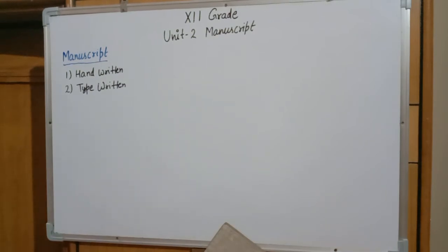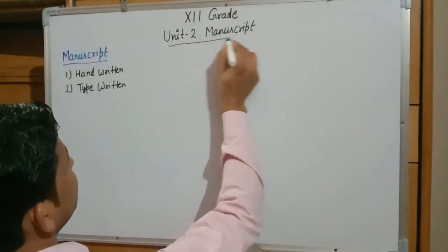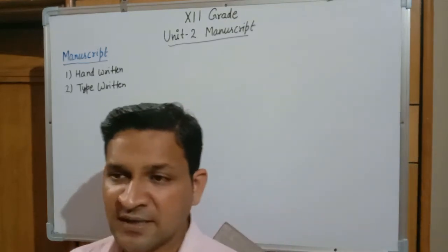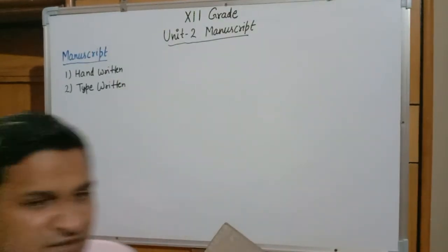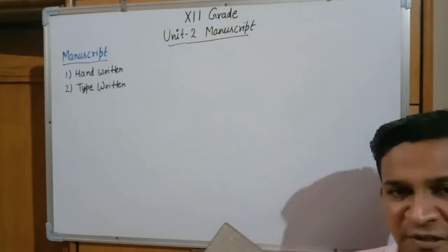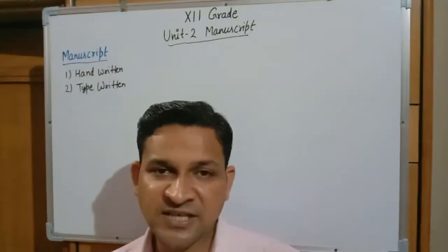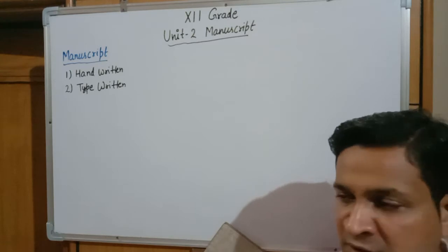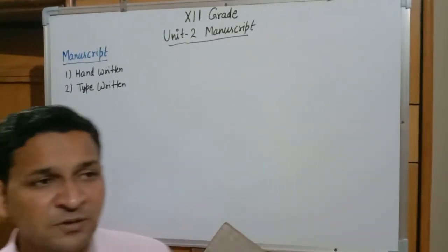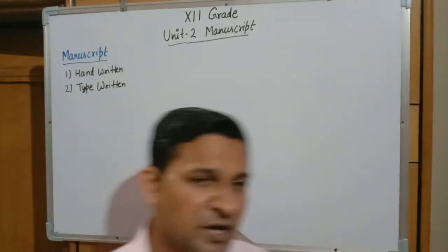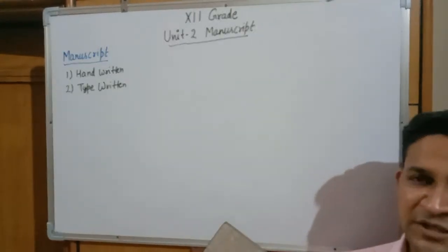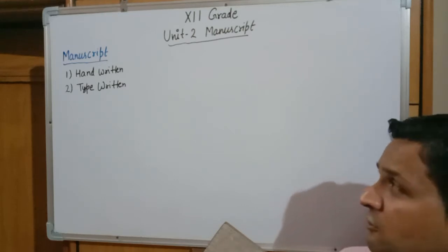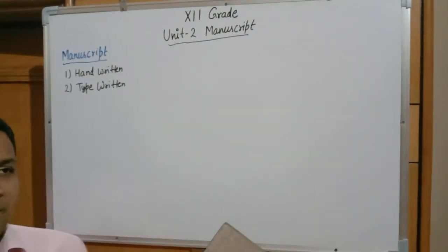The unit name is Manuscript. A manuscript is basically any document that can be either written or typed. It is the concept of a rough document that is either handwritten or typewritten, but it is not finalized for printing or publishing.